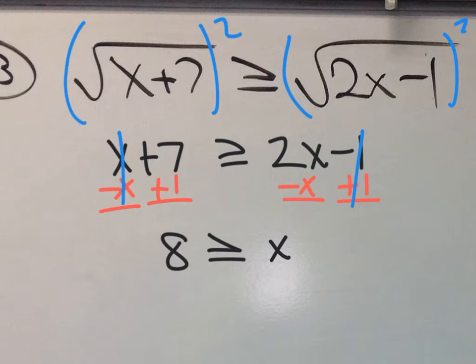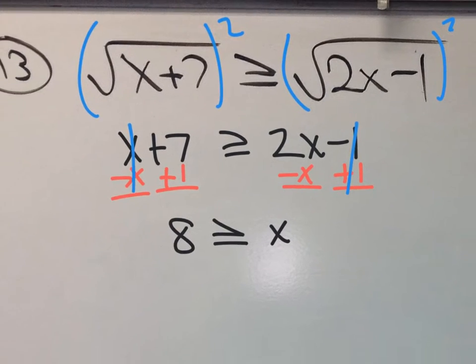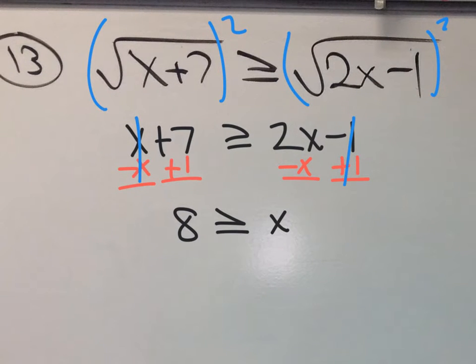So here's my answer x is greater than or equal to, I mean 8 is greater than or equal to x but we know we don't want 8 being greater than or equal to x. Let's write it the right way x is less than or equal to 8. Now you might be thinking wait why did you flip the symbol? Again, I didn't flip anything.